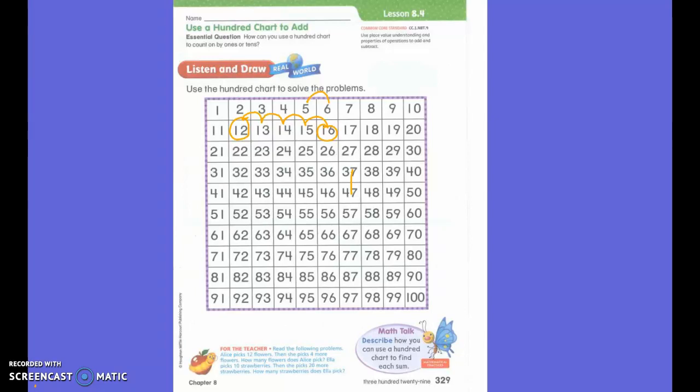Ella picks 10 strawberries. Then she picks 20 more strawberries. How many strawberries does Ella pick? First we start at 10. Then I want to add 20 more. So I'm going to move down 2 times. So I start at 10 and I go 1, 2.